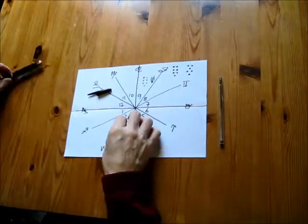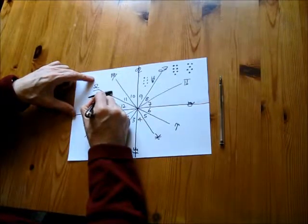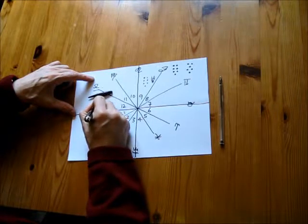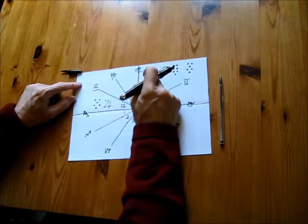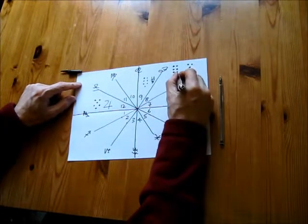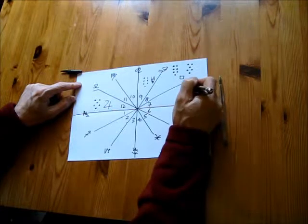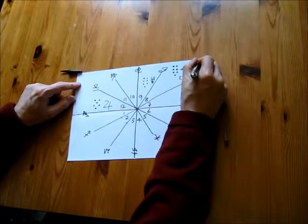So we have acquisitia in the twelfth house. Jupiter there, so this is one, two, three. It's a square between the two of them.